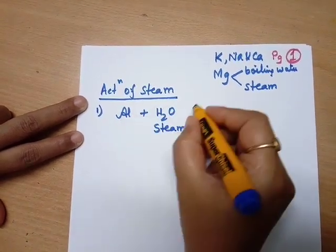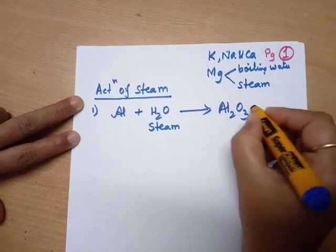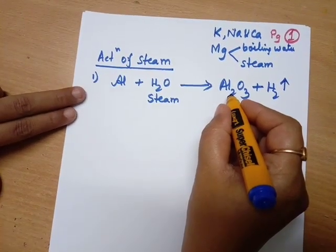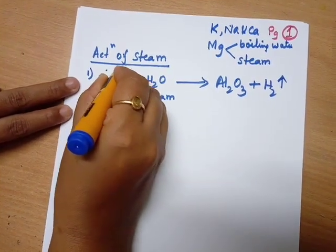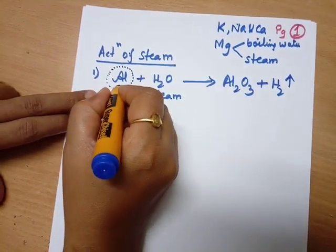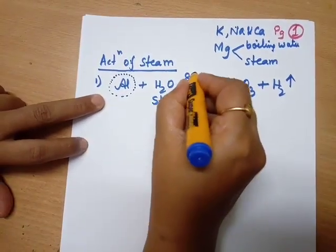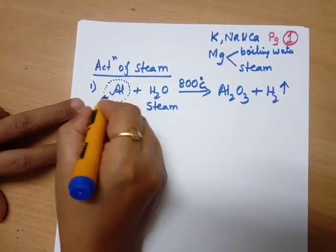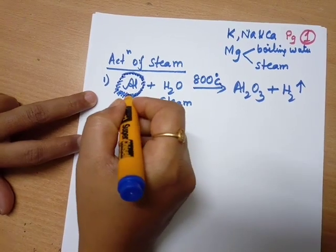When steam is passed through aluminium metal, it forms aluminium oxide plus hydrogen gas. This aluminium oxide is a white coat which forms on the aluminium during the reaction and does not allow any further reaction.